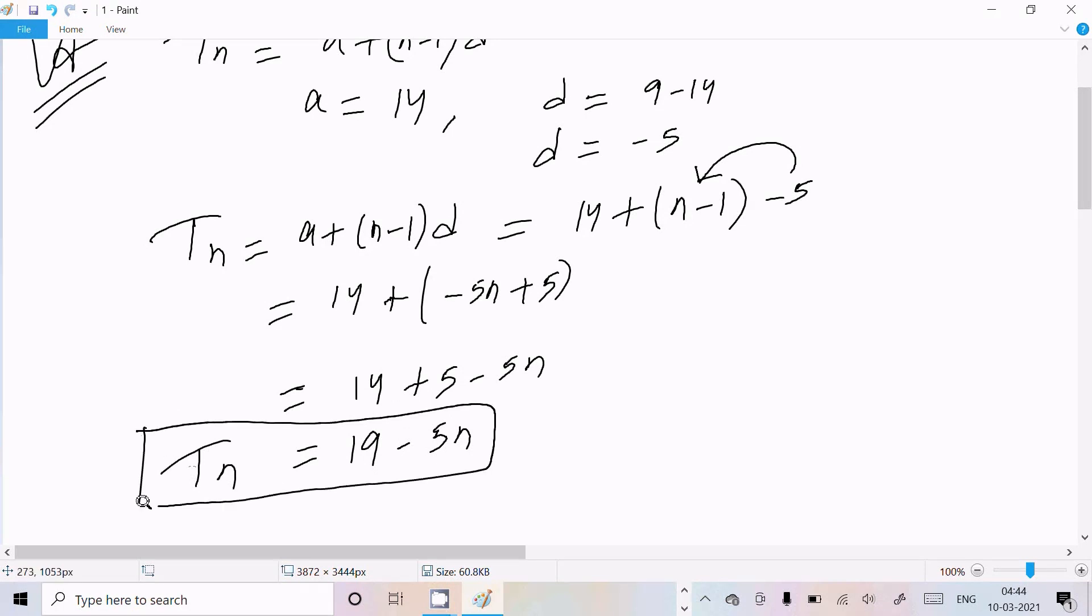That I calculated, so 19 minus 5n, this is the nth term. Now let's see what the 12th term.